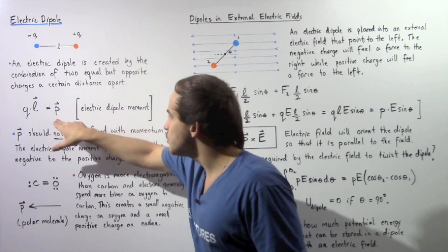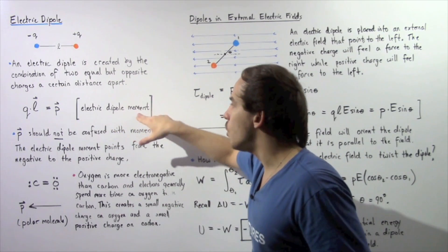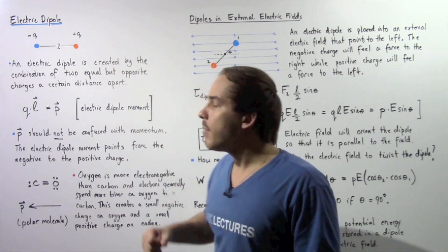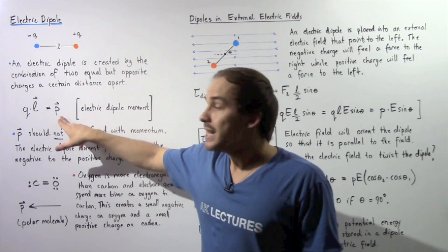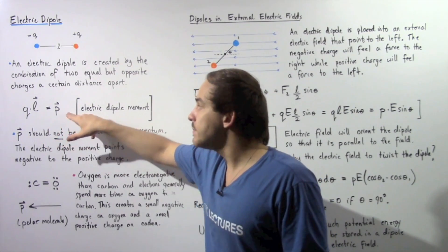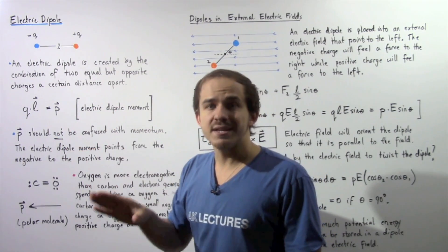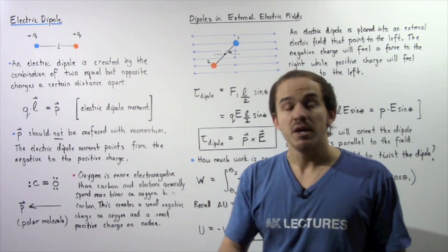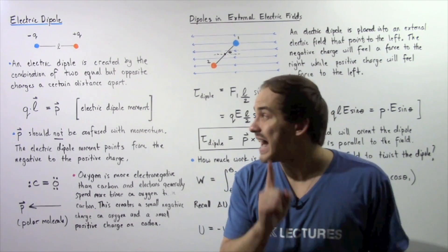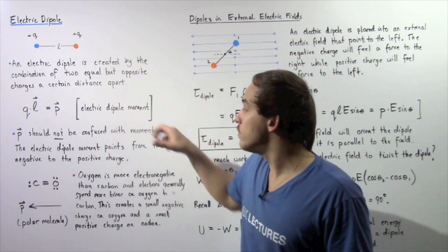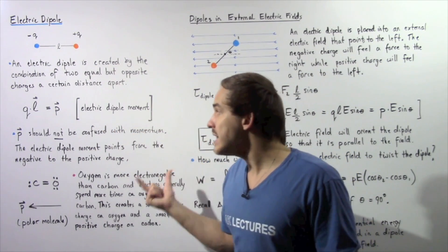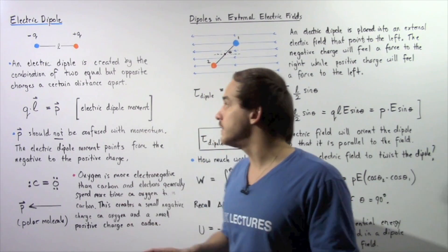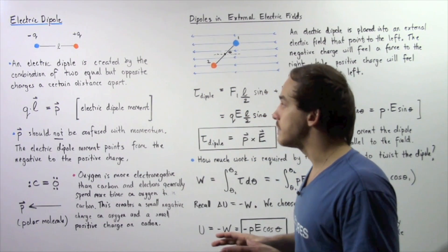This is known as the electric dipole moment and it's denoted by lowercase p. This happens to be the same symbol as linear momentum, but you should not confuse electric dipole moment and momentum because these are completely different concepts.